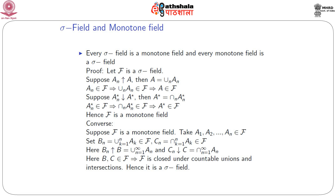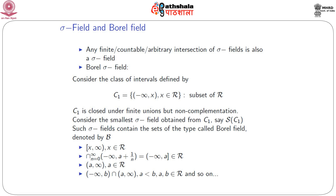So a monotone field is a sigma field, and a sigma field is a monotone field. One important result is that any finite, countable, or arbitrary intersection of sigma fields is also a sigma field. This is very important: to get the smallest sigma field, we can take the intersection of all sigma fields.